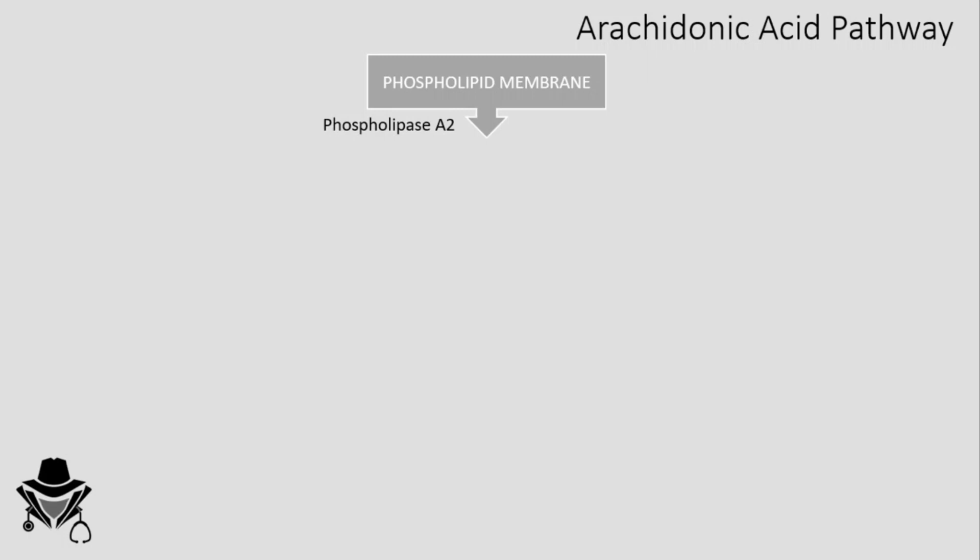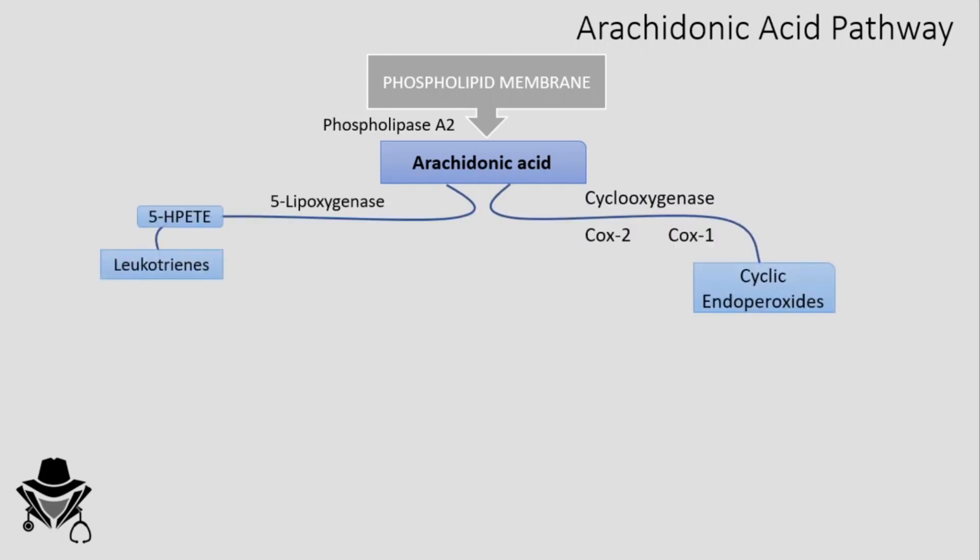Phospholipase A2, as apparent from its name, will cleave the phospholipid membrane to give us arachidonic acid. Arachidonic acid can then undergo two major pathways: the cyclooxygenase pathway, seen on the right side of the diagram, and the lipoxygenase pathway, seen on the left side. In the cyclooxygenase pathway we have two important enzymes — COX-1 and COX-2. COX-1 is the constitutive enzyme responsible for physiological production of eicosanoids.